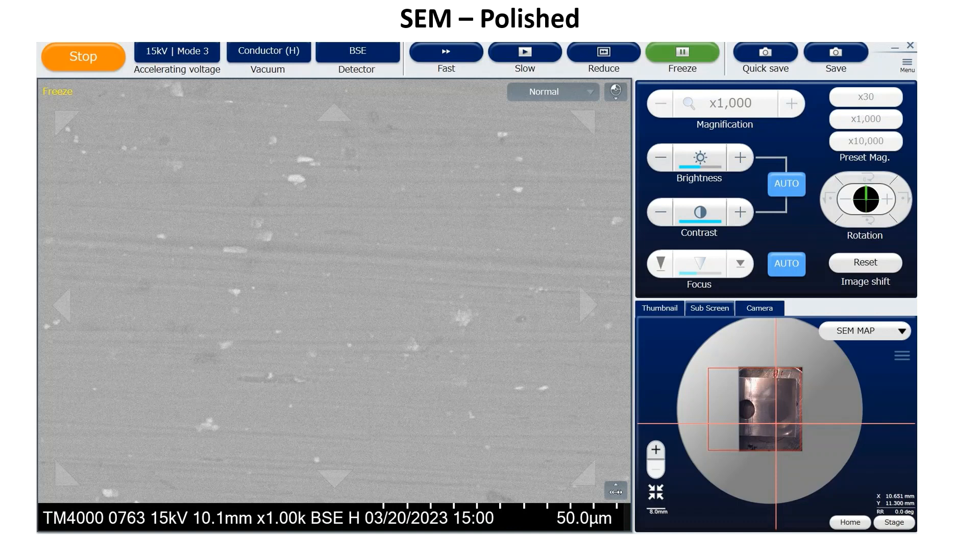So unfortunately the SEM that I have access to does not have the resolution to image the aluminum oxide grain structure, so these are all the images I got. But I still think they provide an interesting look at some of the different surface finishes. The surfaces post anodizing did not look appreciably different at a thousand times magnification than when I started, so I didn't include any of those images. So anyways that's all I got - thanks for watching and I hope this was interesting and informative.